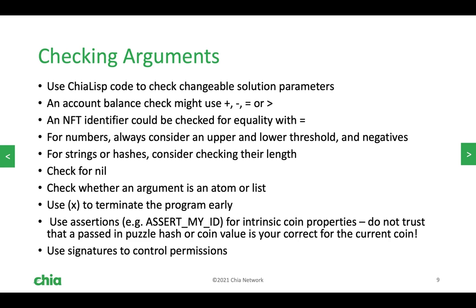Lastly, there are checks run outside your program — the assert family of conditions as well as signatures. When you output them from your program, they cause code to be run in the Chia blockchain itself. That code is very simple, specialized, and efficient. If one of those conditions is present, let the system check that for you — don't go recoding a signature check or ID verification in your program when those conditions already exist.